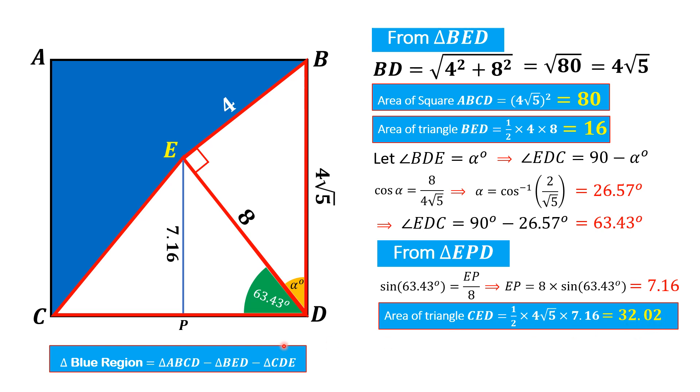Now all three quantities involving in this are found. And now we substitute in this formula. We get area of blue region equals 80 minus 16 minus 32.02, and that is 31.98 square units, which is the required answer. If you are new on my channel then please subscribe my channel and give a thumbs up to the video.